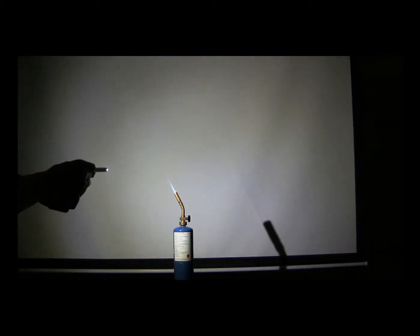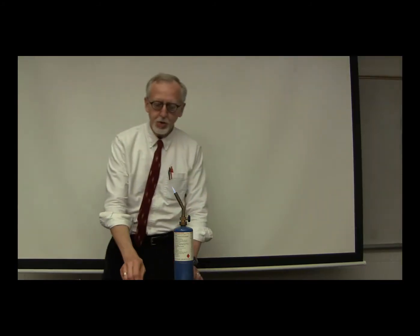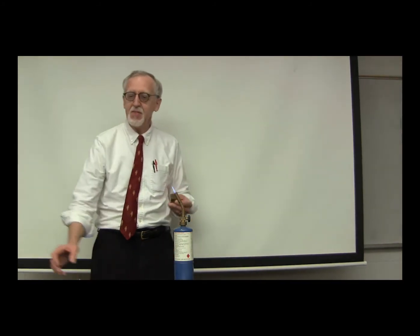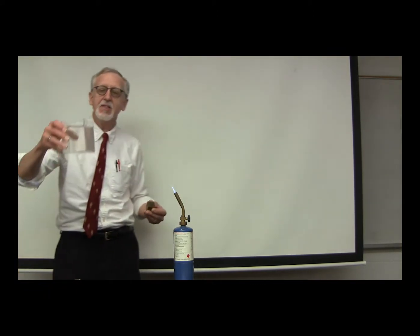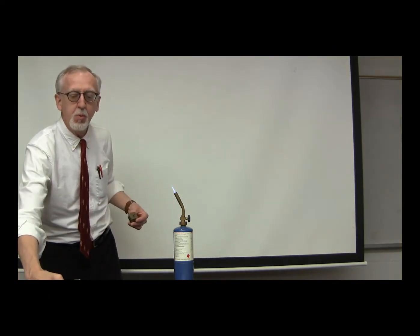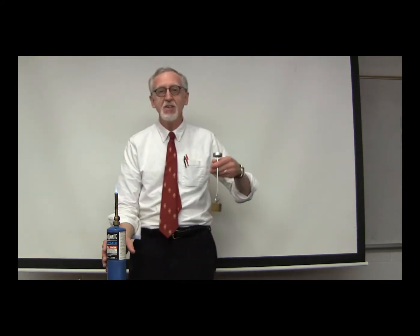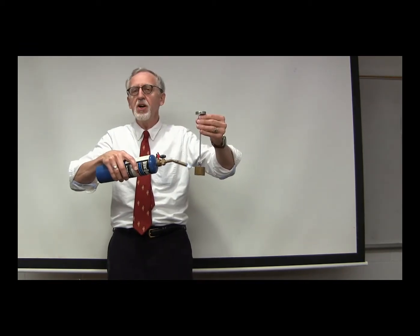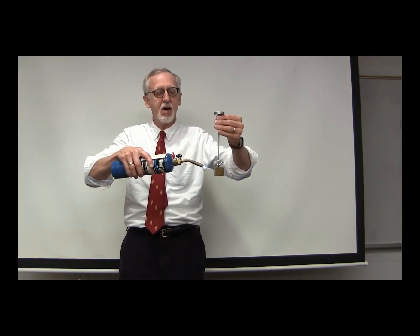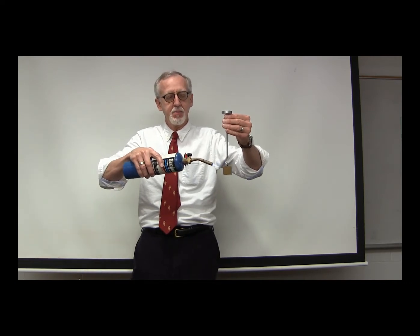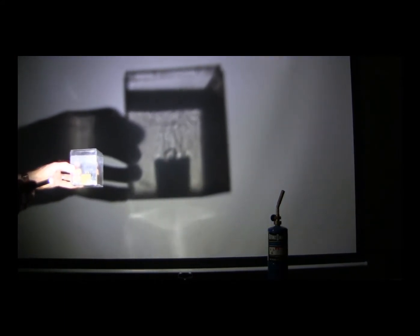Now I'm going to show a slightly different convection current. I'm going to heat up this mass of brass and then put it into this sample of water and shine the light through it, so we can see the convection currents in the water. I'll turn the lights off so we can see them better. There we go — you can see the convection currents rising up off that hot piece of metal and going up to the surface.